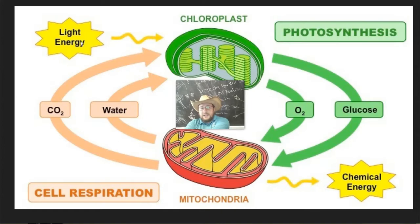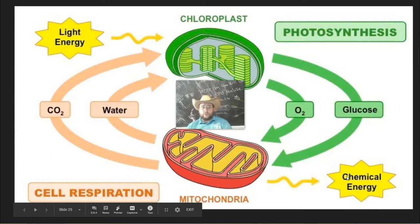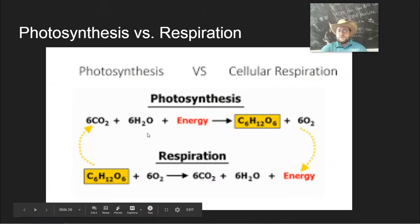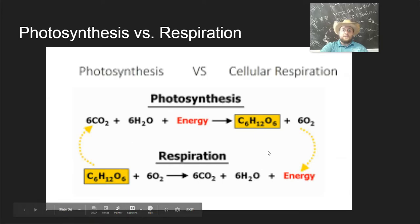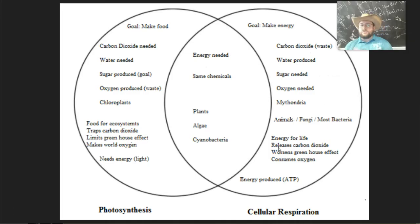The glucose that chloroplasts make is used by the mitochondria to make carbon dioxide, which is then used by the chloroplasts to make the glucose — that's the cycle of matter that happens in life. Meanwhile, energy flows through the ecosystem because the energy of sunlight is used by the chloroplasts to power photosynthesis to make food, which is then broken down inside the mitochondria using that chemical energy for life. The energy doesn't cycle back — it is used up — but the matter does cycle. That's why we say energy flows while matter cycles.